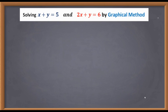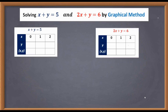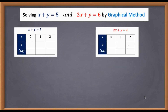Now we are going to draw tables for both equations, containing x coordinate, y coordinate, and the point (x, y). I have assumed the x coordinates as 0, 1, and 2 for both equations. You can take any values — even two values are enough, because to draw a straight line we require a minimum of two points.